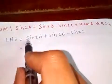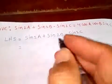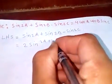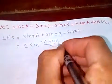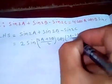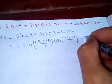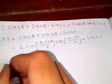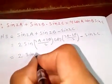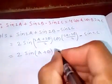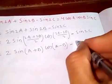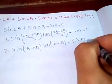Now let's apply the formula sine A plus sine B equals 2 sine((A+B)/2) cos((A-B)/2), giving us 2 sine((A+B)/2) cos((A-B)/2) minus sine 2C. Sine 2C expands as 2 sine C cos C, so we have 2 sine((A+B)/2) cos((A-B)/2) minus 2 sine C cos C.